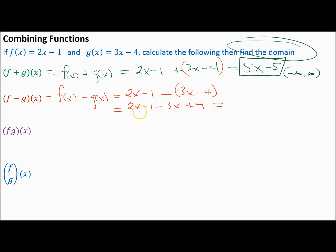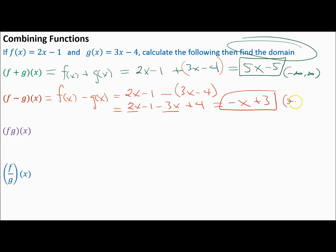Combining like terms: 2x minus 3x is negative x, and negative 1 plus 4 is plus 3. When you take a polynomial and subtract another polynomial you still get a polynomial, so the domain is all real numbers, or negative infinity to infinity.